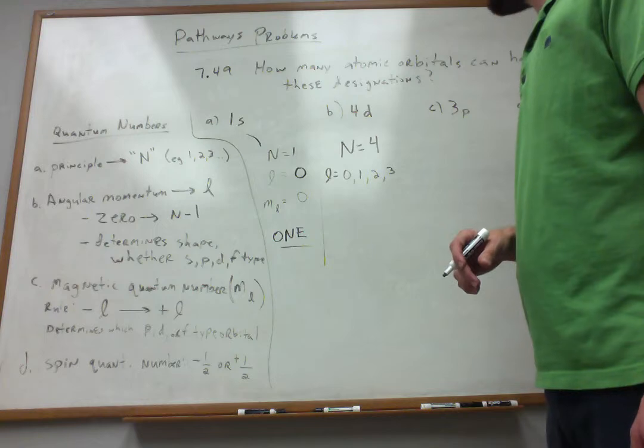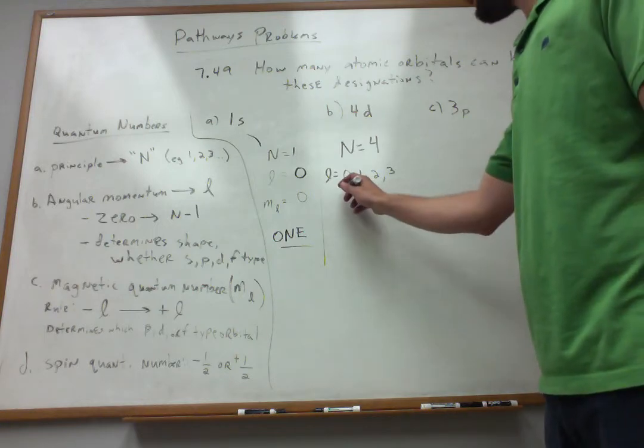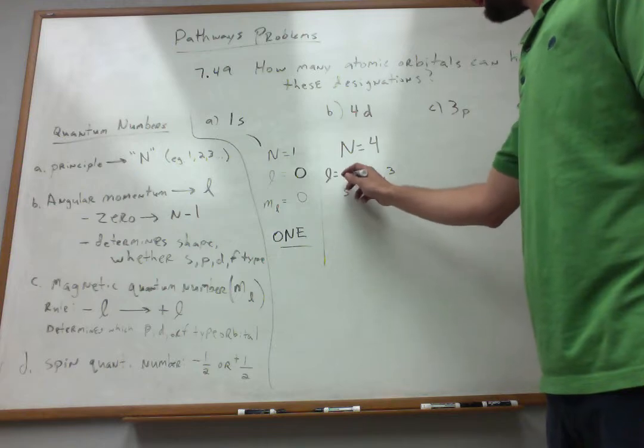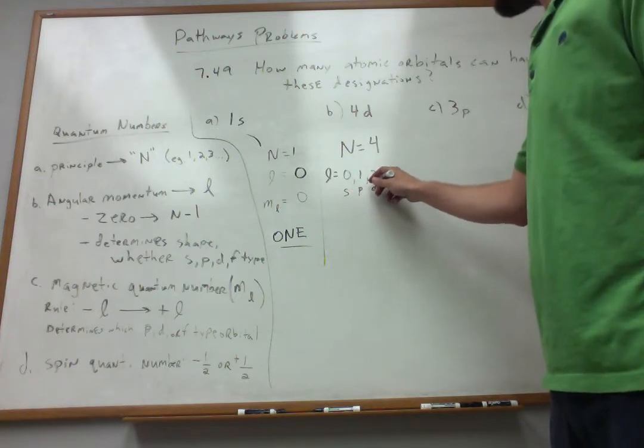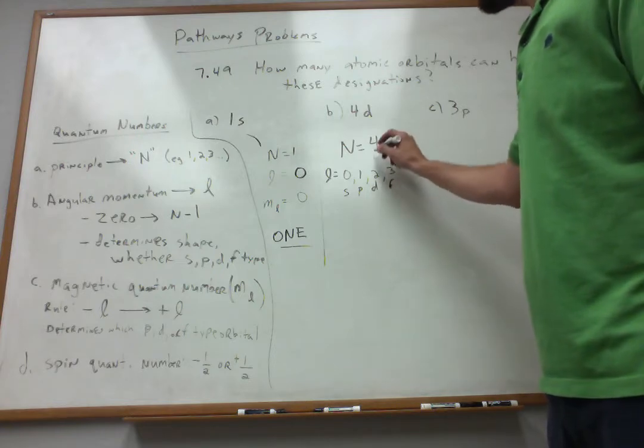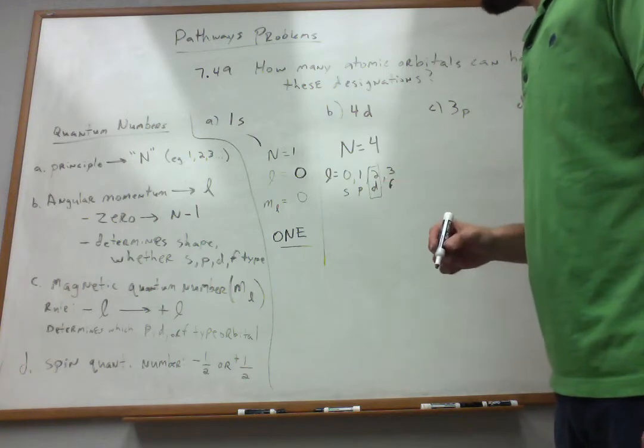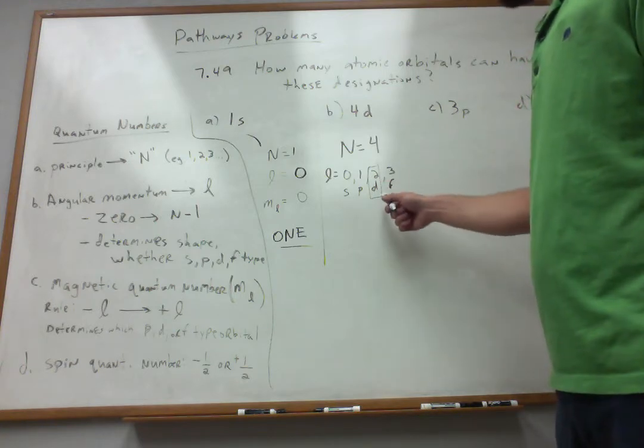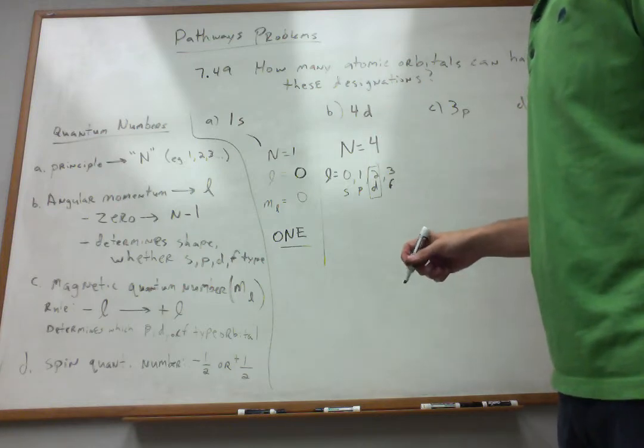Now, I'm dealing with which orbitals? d orbitals. So remember, 0. If l is 0, it's the s. If l is a 1, it's the p. If it's 2, it's the d. And if it's 3, it's the f. I'm talking specifically about the case here where l is equal to 2 because I specified a d-type orbital here.